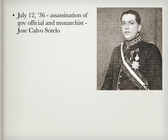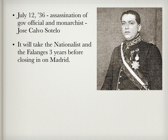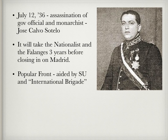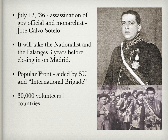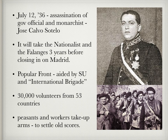In July of 1936, the assassination of prominent government official and monarchist Jose Calvo Sotelo occurred. Francisco Franco asked Mussolini — who gave him bomber and fighter planes — and Hitler — who provided transport planes — for military aid to get his foreign legion back to Spain. Taking Madrid would not be so easy as planned. It would take the Nationalists and the Falange three long, bloody years of battle before closing in on Madrid. They were helped by foreign intervention from the German Nazis and the Italian fascists. The Popular Front was aided by the Soviet Union and what became known as the International Brigade, made up of 30,000 volunteers from 53 countries including the United States and Canada. Meanwhile, peasants and workers would take up arms to settle old scores.